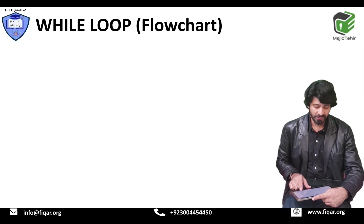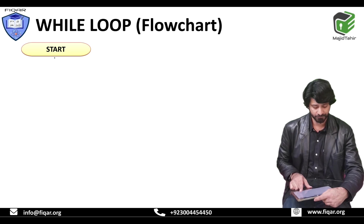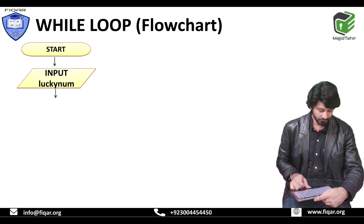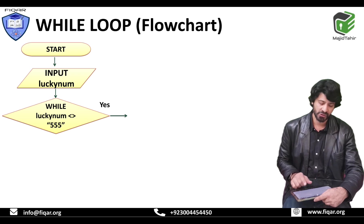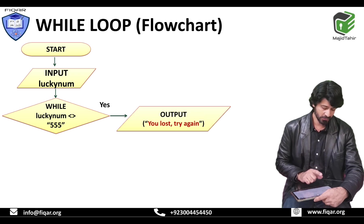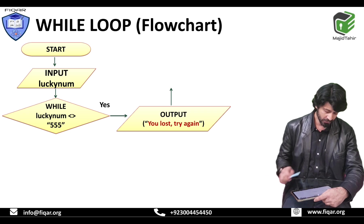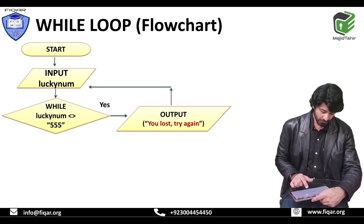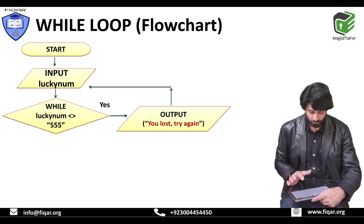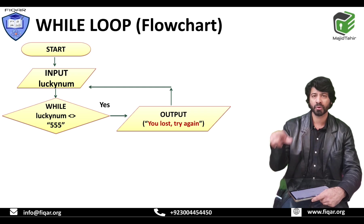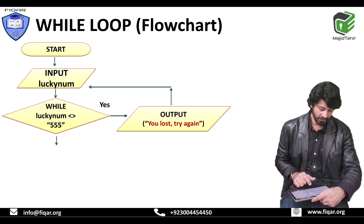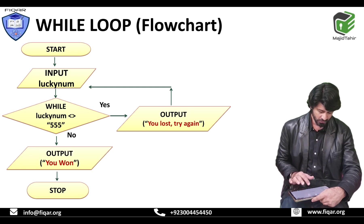While loop flowcharts can be like this: start of program, input lucky number, decision symbol — while lucky number is not equal to 555. In flowcharts, for loops or conditional statements, we use the decision symbol. If yes — lucky number is not equal to 555 — it says sorry you lost, try again, and takes you back to the input. If no — meaning you have entered 555 — it outputs you won, and the program stops.